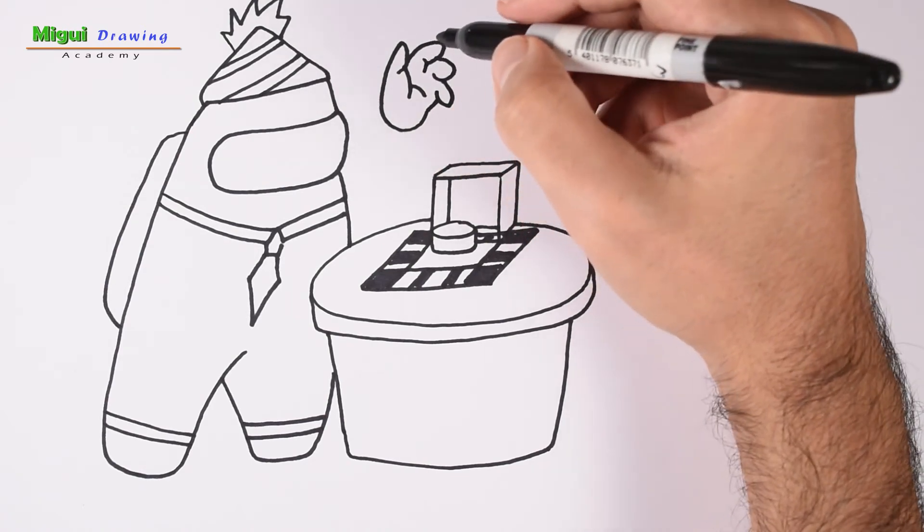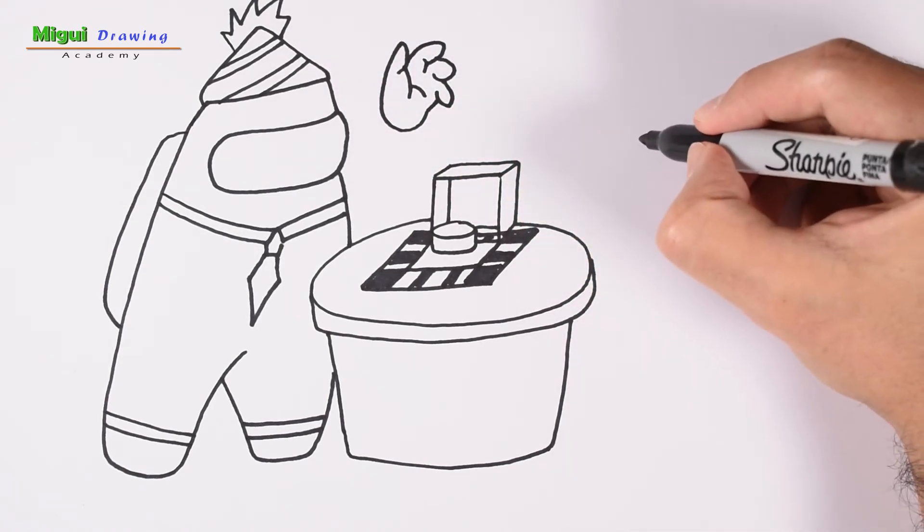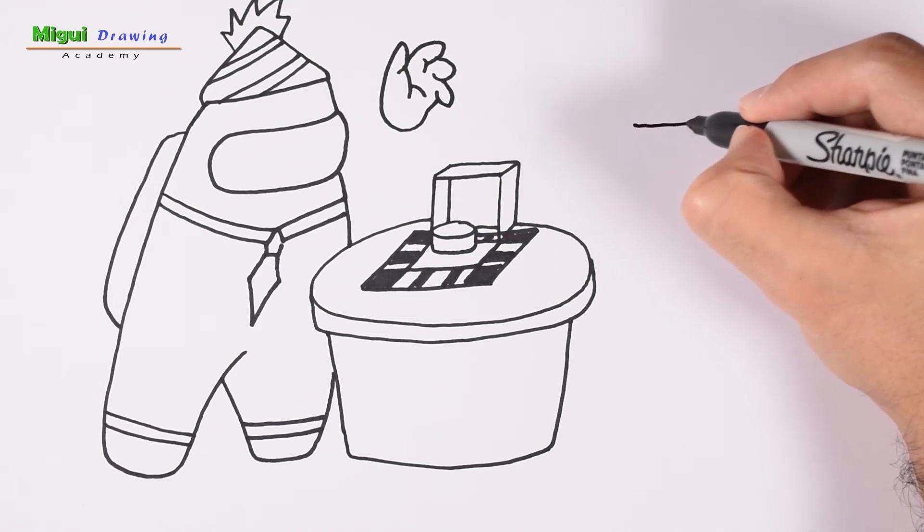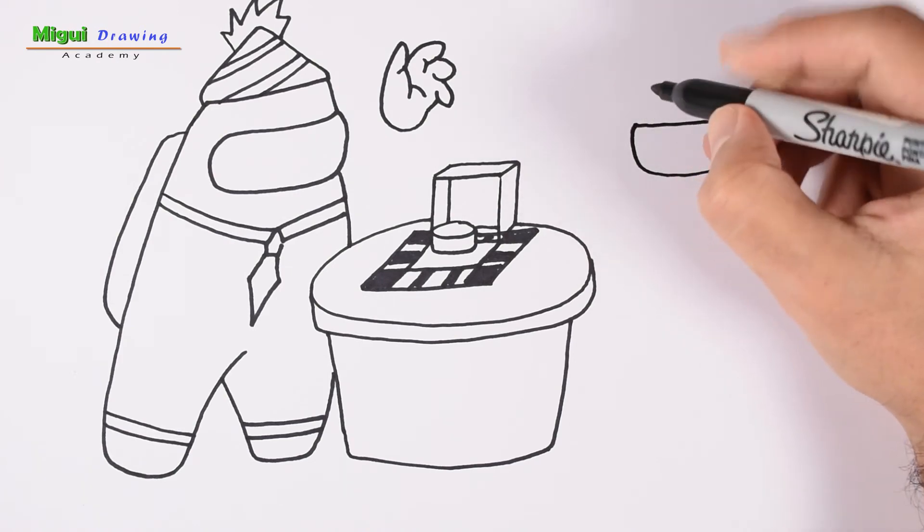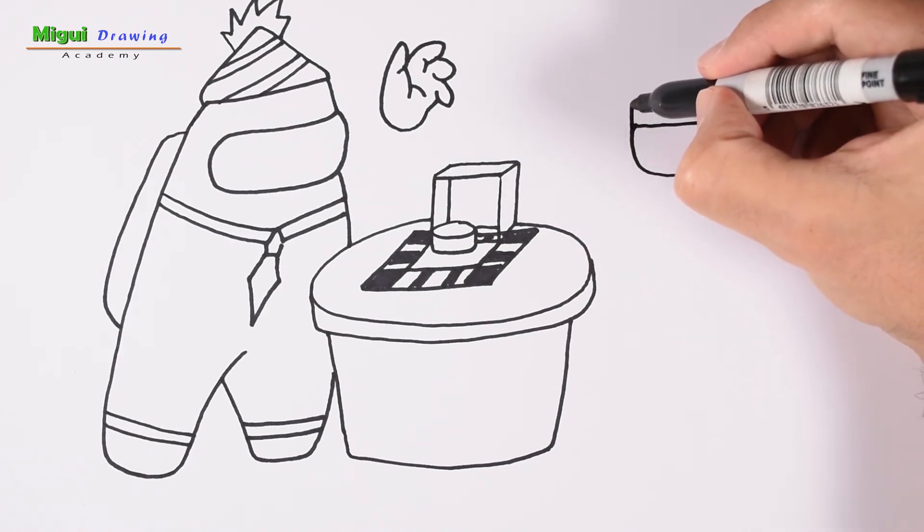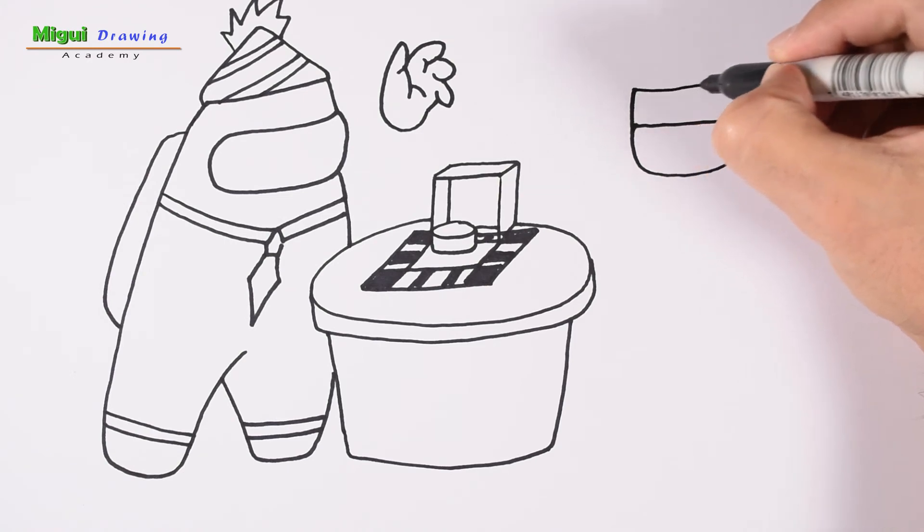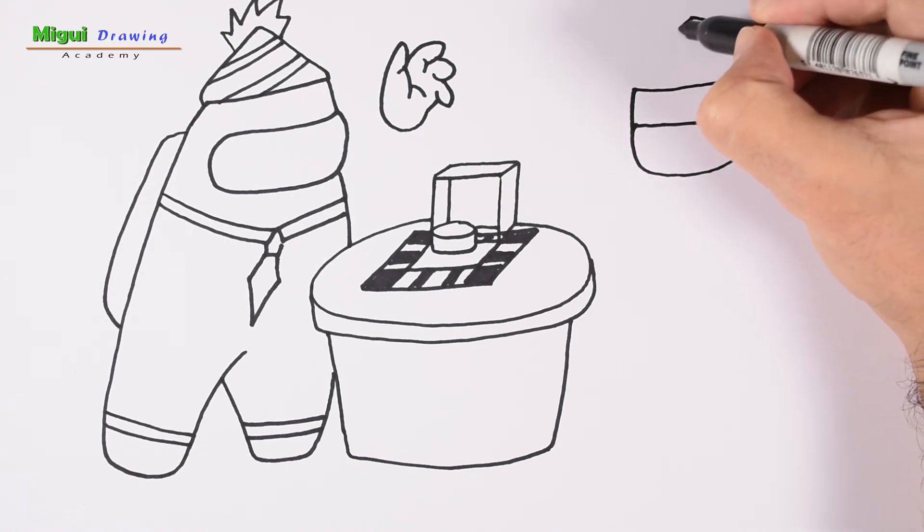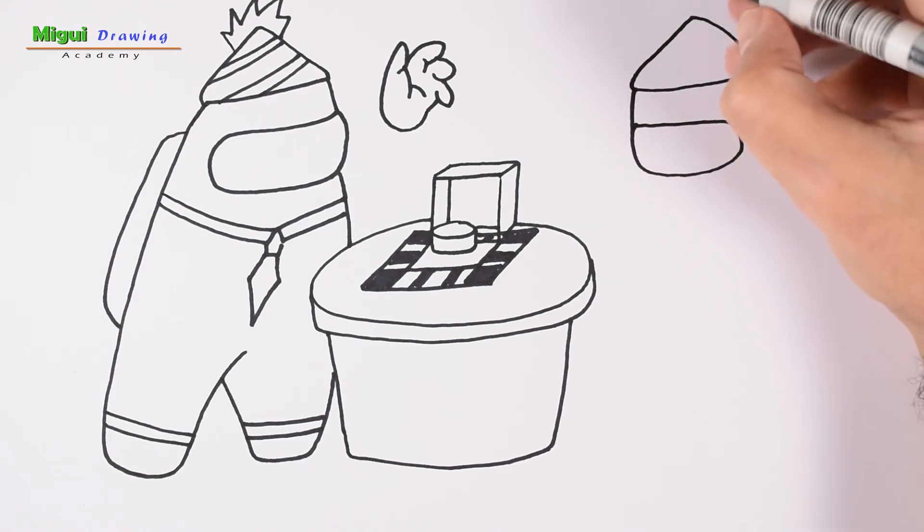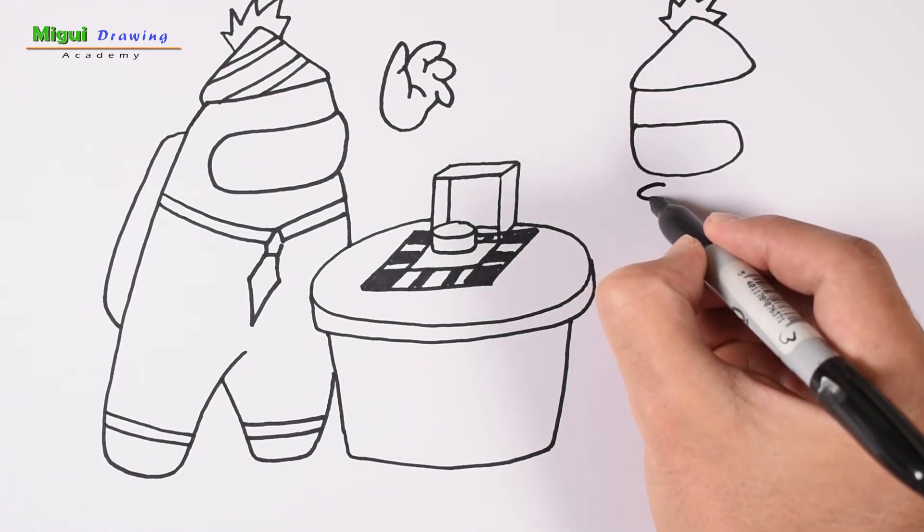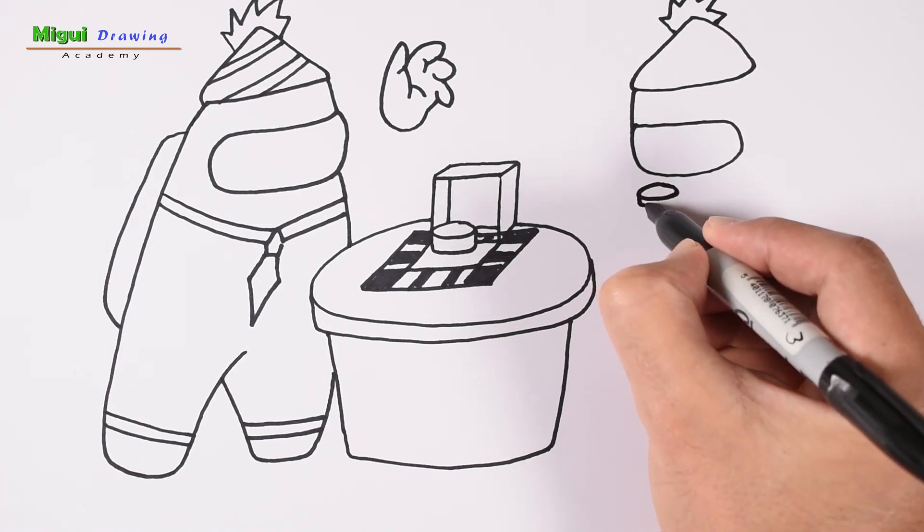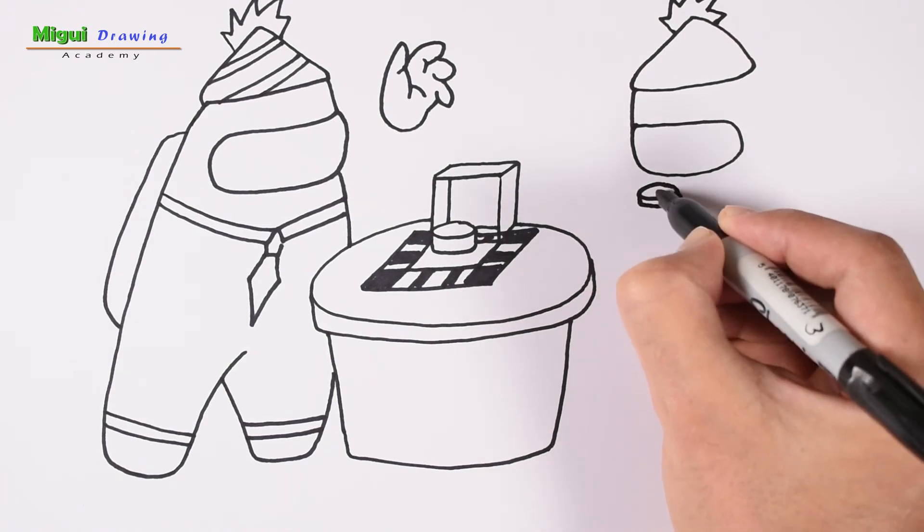And at the right side let's do another crewmate. Draw also the hat. In this case we're going to make the watch, so he's kind of looking at the watch, waiting for the right time to push the button.